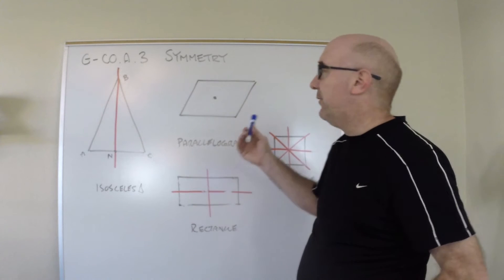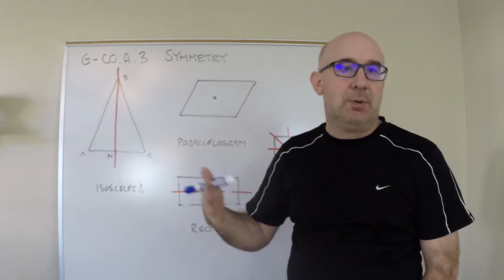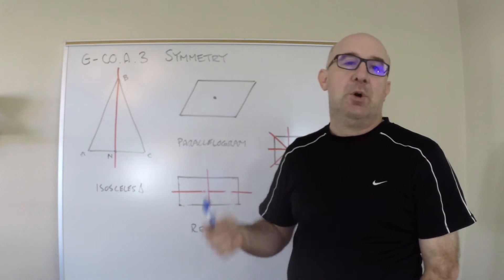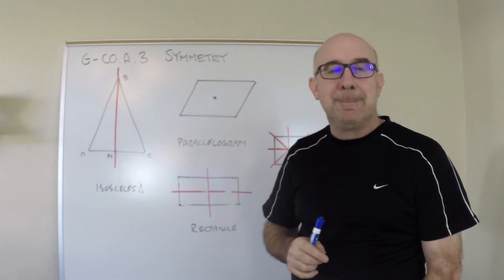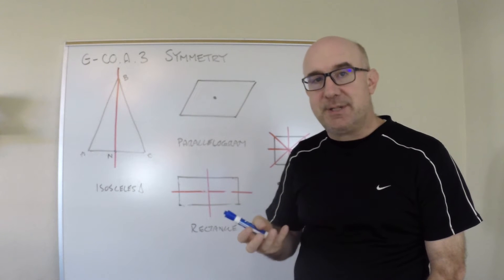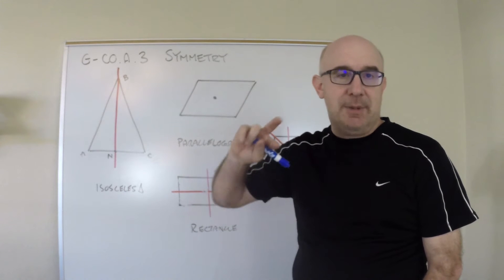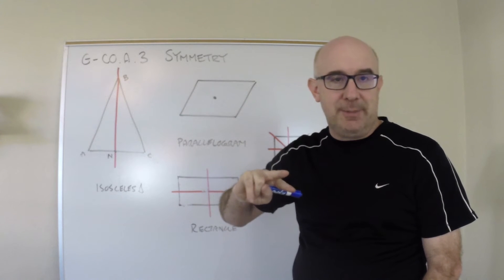So this really is referring to line symmetry or reflectional symmetry, rotational symmetry, and maybe point symmetry. Point symmetry is really a subset of rotational symmetry, so I think this is about line and rotational symmetry.